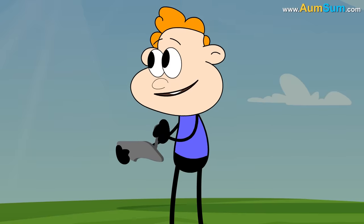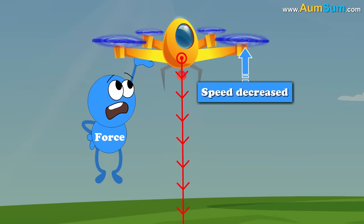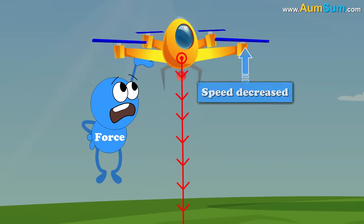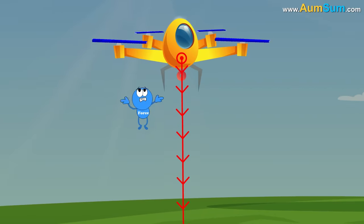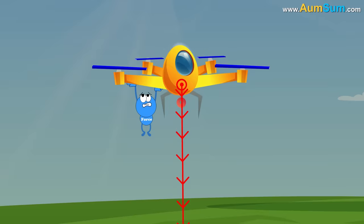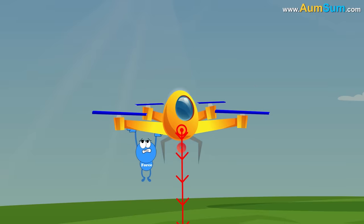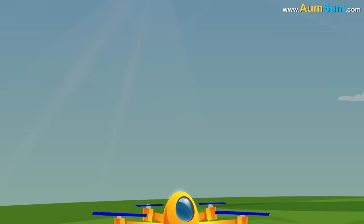Lastly, if the speed of rotation of the rotors is decreased such that the net force generated becomes less than the gravitational force, then the drone starts coming down — as in descending.